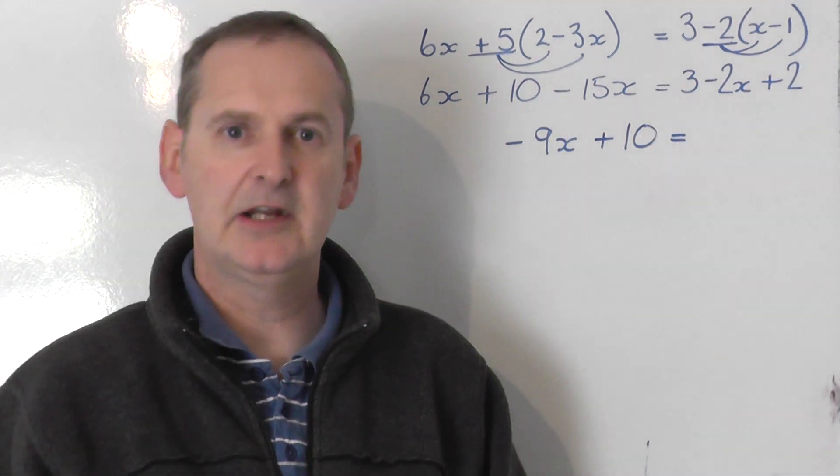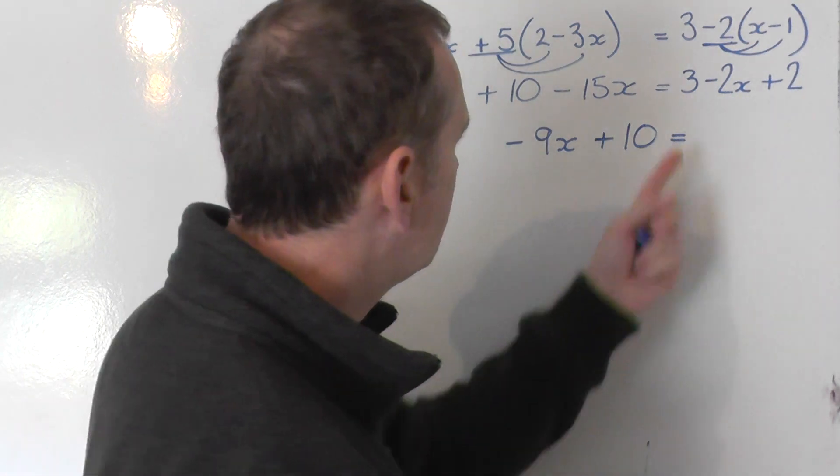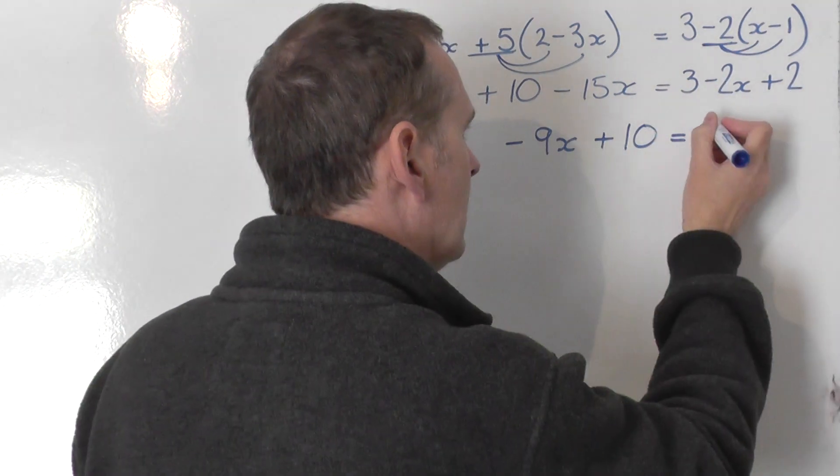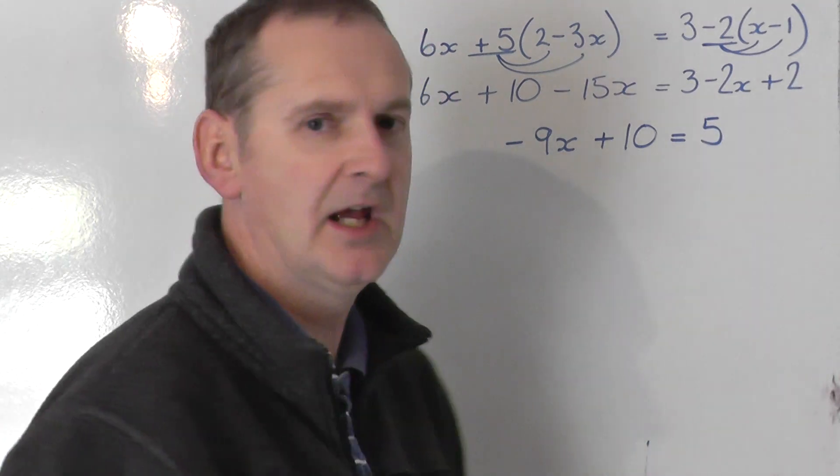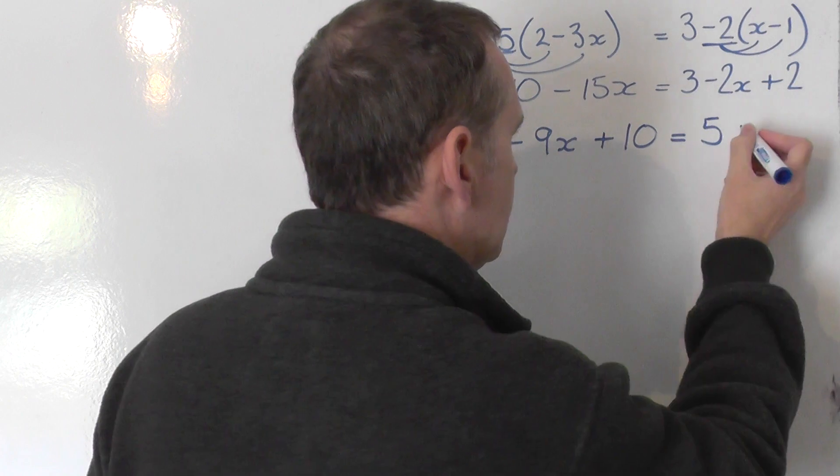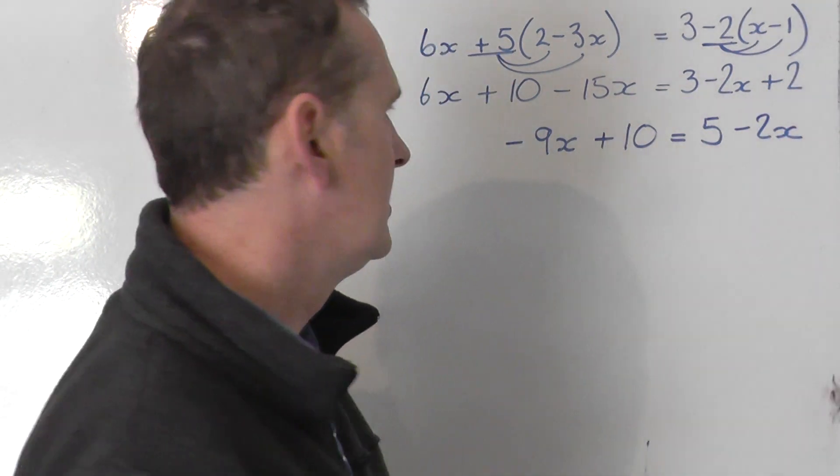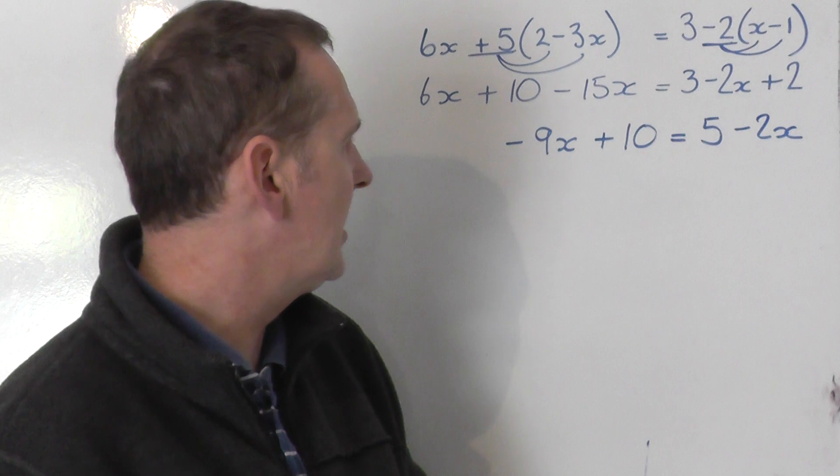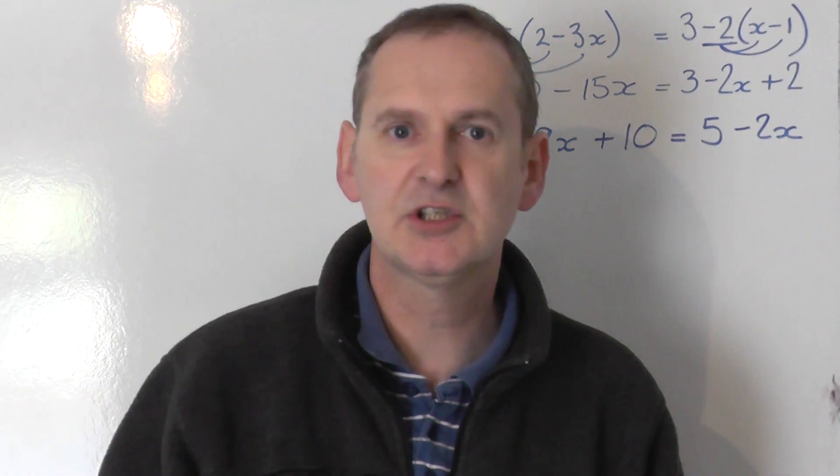On the right hand side I've got a 3 and a plus 2. They can go together. Both are pluses so you get 5. Then I've got a minus 2x which doesn't simplify. So we end up with minus 9x plus 10 equals 5 minus 2x.